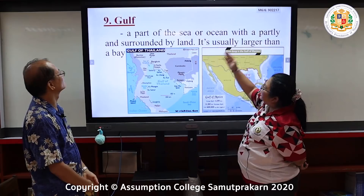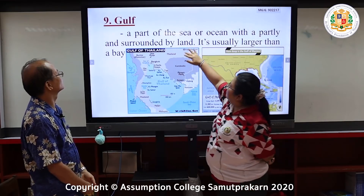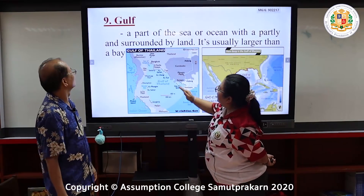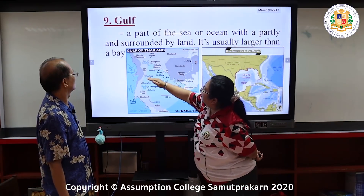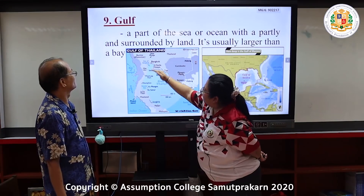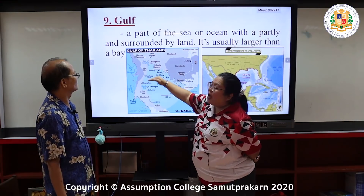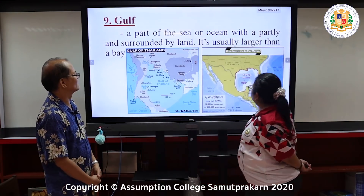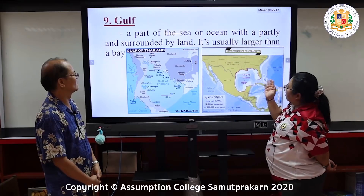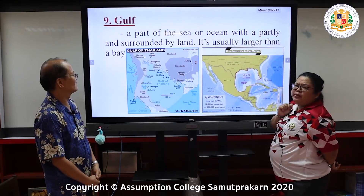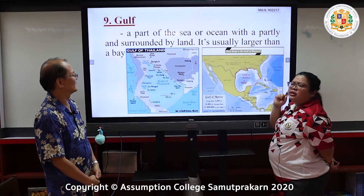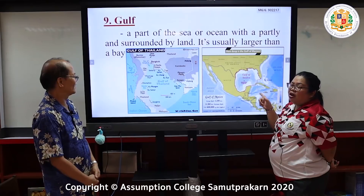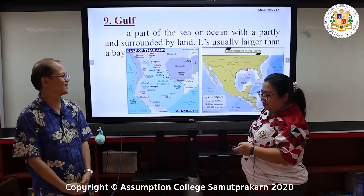A gulf is a part of the sea or ocean that is partly enclosed by land and is usually larger than a bay. An example is the Gulf of Mexico, located in the America continent.